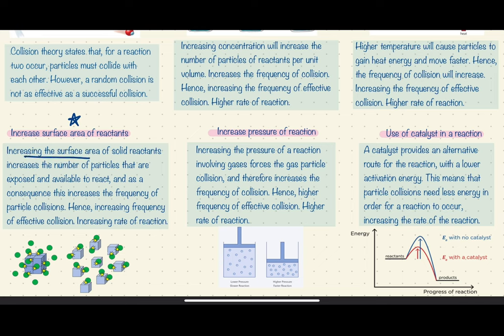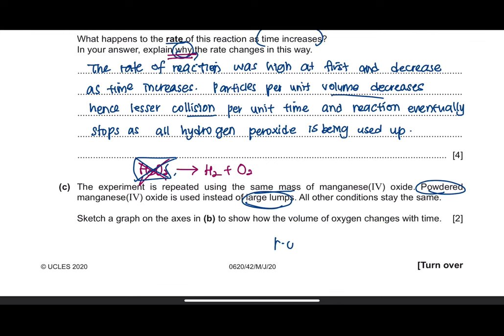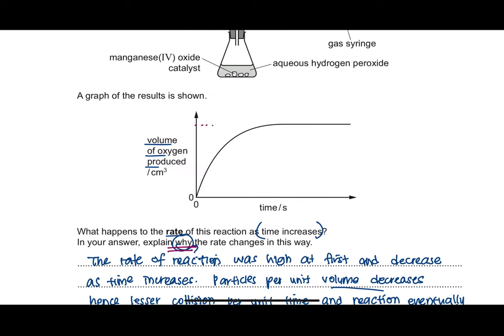Increasing the surface area increases the number of particles exposed and available to react, which increases the frequency of particle collision and therefore the frequency of effective collision. Using powdered reactant gives a higher rate of reaction compared to large lumps. The total volume of gas collected remains the same; however, you collect the oxygen at a faster rate. The graph for the powdered catalyst reaches the same final volume but achieves it in a shorter time.